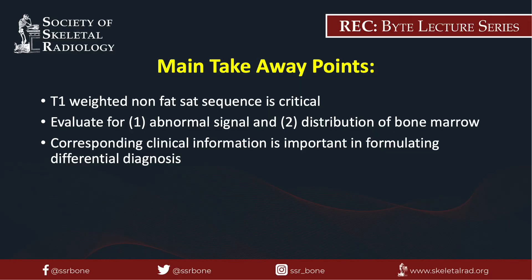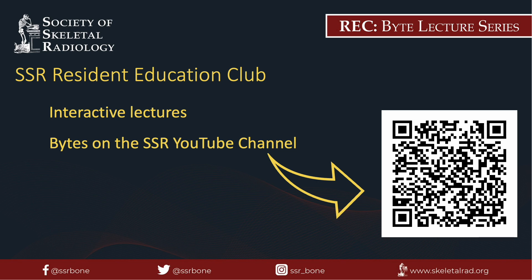The main takeaway points are: the T1-weighted sequence is the most critical in evaluating bone marrow; bone marrow should normally be hyperintense to muscle on T1-weighted images; it is important to validate the distribution of red marrow and yellow marrow; and corresponding clinical information is critical in generating an accurate differential diagnosis. Be sure to check out the SSR Resident Education Club, which features interactive lectures and recorded bite-sized lectures on the SSR YouTube channel, and follow SSR on social media for upcoming lectures and events. Thank you very much.